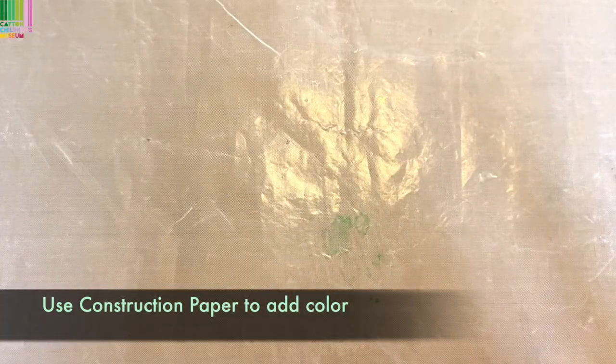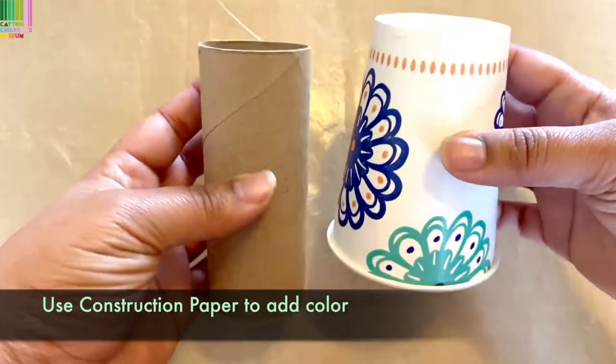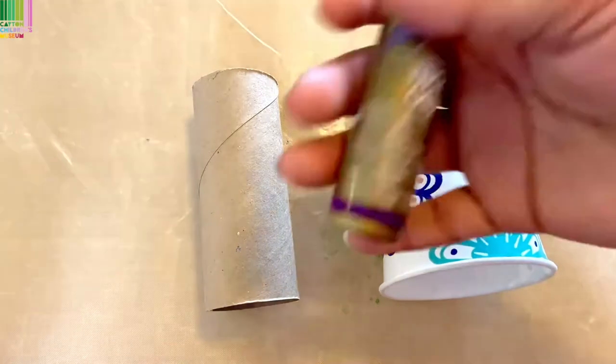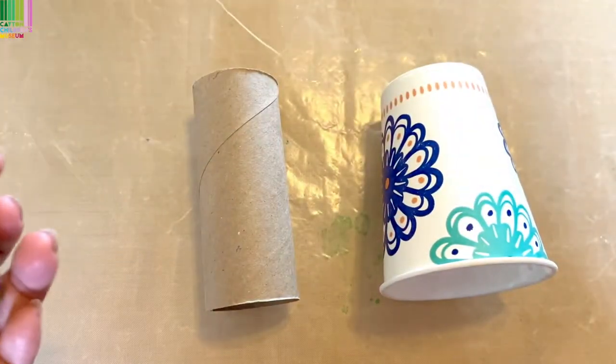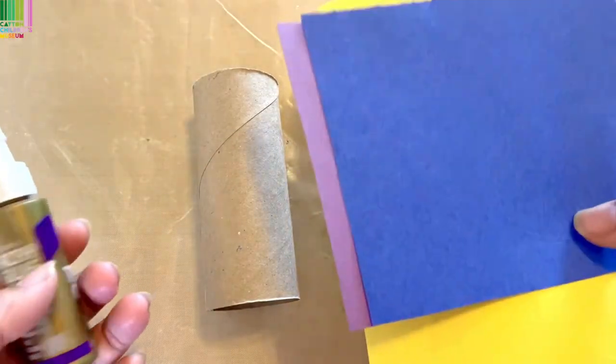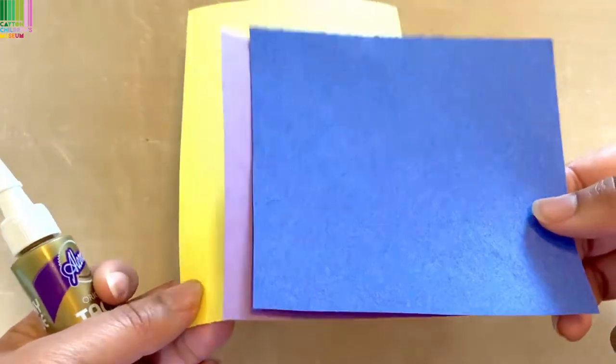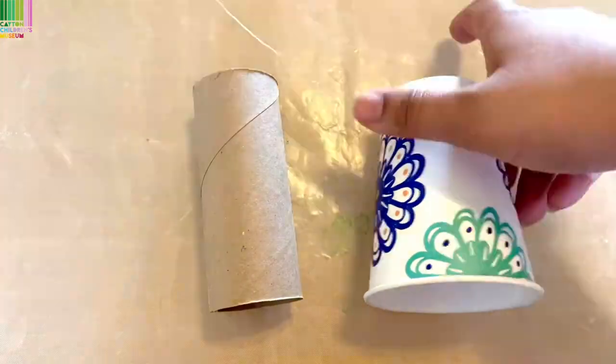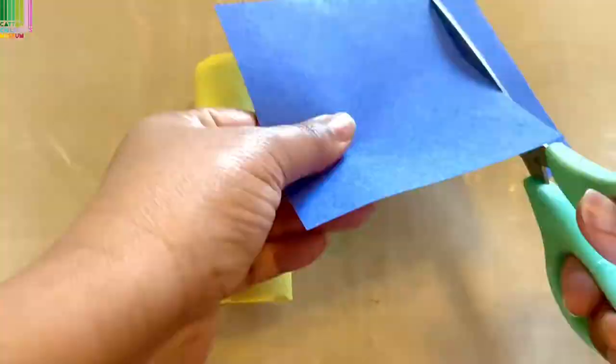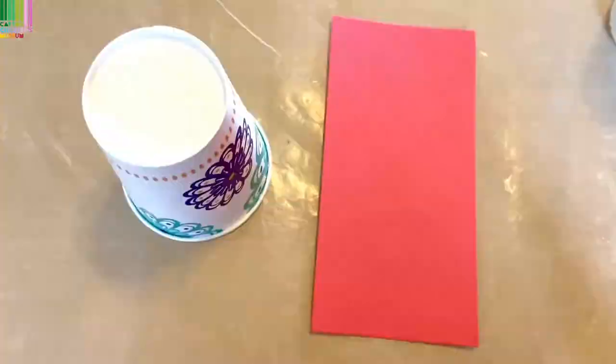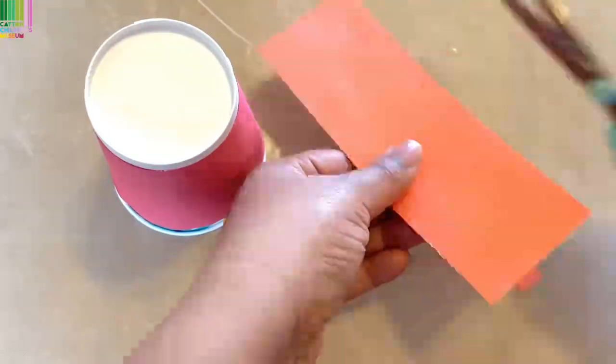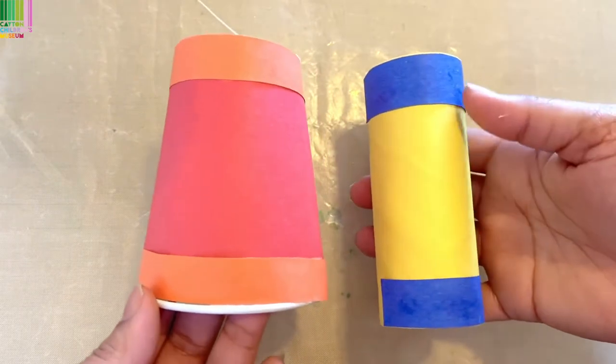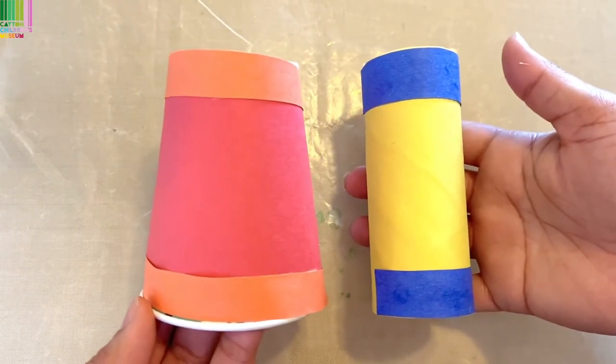The first thing you'll want to do is grab your base, grab your glue, and start adding on details using construction paper. So let's do that now. All right, and now we are going to sit these two to the side to dry.